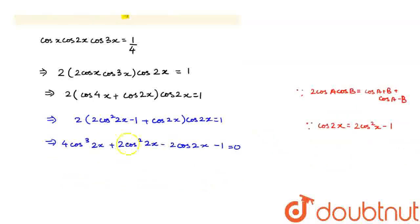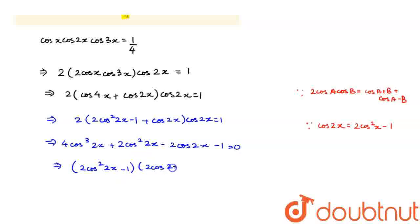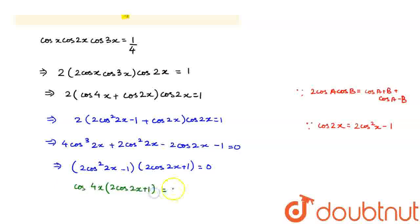On factorizing this, I get (2cos²2x − 1)(2cos 2x + 1) is equal to 0. On simplifying further, I get cos 4x into (2cos 2x + 1) is equal to 0.